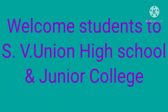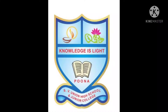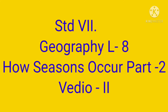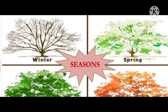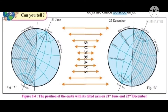Welcome students to S.V. Union High School and Junior College. Standard 7 Geography, Lesson 8: How Seasons Occur, Part 2. Figure 8.4 shows the position of the earth with its tilted axis on 21st June and 22nd December.